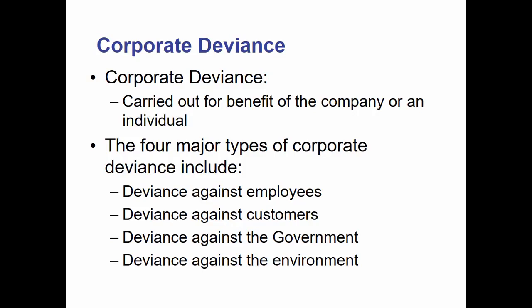First, corporate deviance. Corporate deviance is carried out for the benefit of a company or an individual, namely one of the leaders of that company. There are four major types: deviance against employees — such as underpaying people or not providing health insurance; deviance against customers, such as price gouging; deviance against the government, most frequently in the form of not paying taxes or not following regulations; and deviance against the environment, like polluting a river.